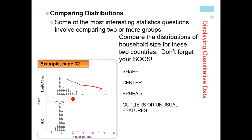For center, we can find the mean or the median. It would be really easy to quickly find the median. We have a total of 50 people surveyed in each country, so our median would be right between the 25th and the 26th value. If we count: 4, then 14 for this high bar — that's 18, then 5 more here, so our median must be within this bar right here.